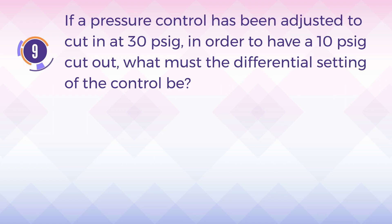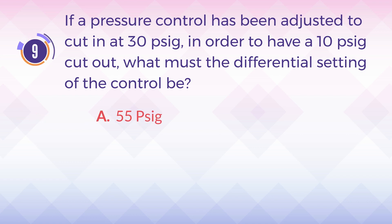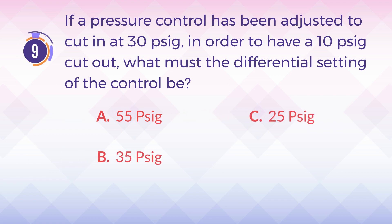Number nine: if a pressure control has been adjusted to cut in at 30 PSIG, in order to have a 10 PSIG cut out, what must the differential setting of the control be? A) 55 PSIG, B) 35 PSIG, C) 25 PSIG, D) 20 PSIG.